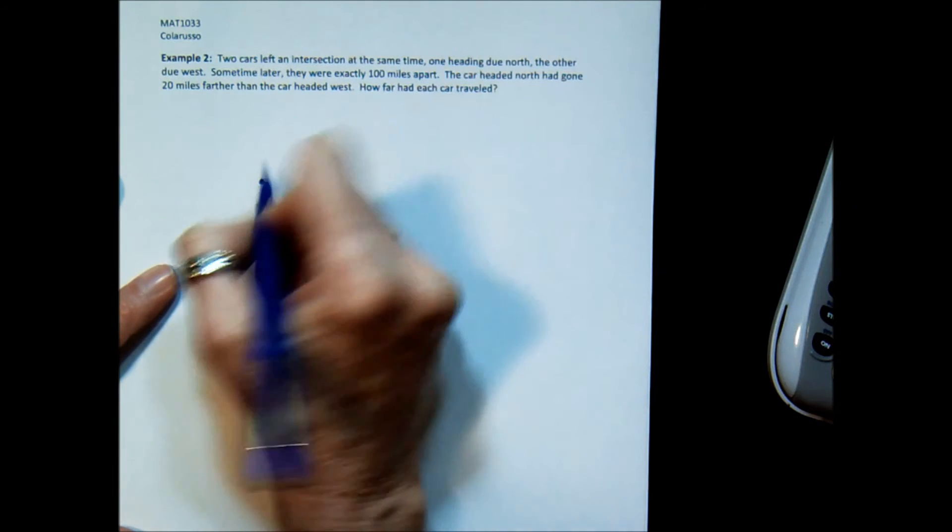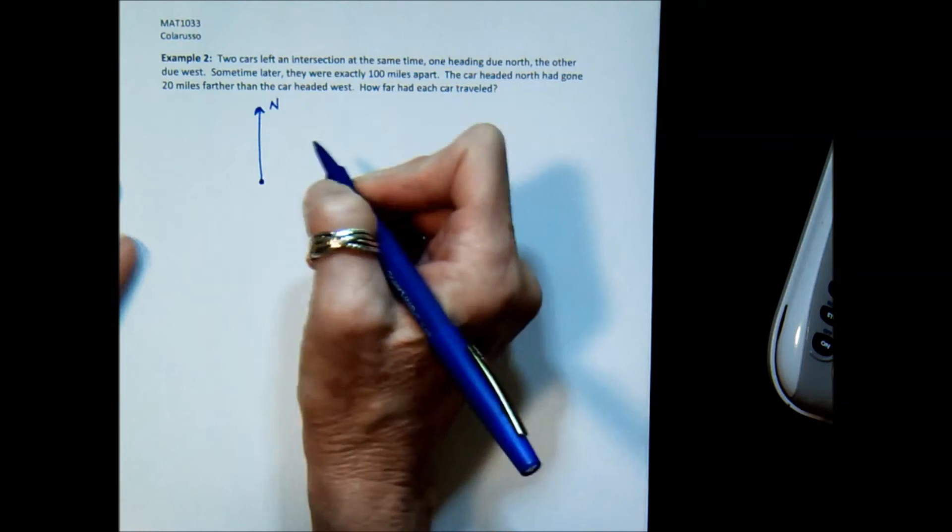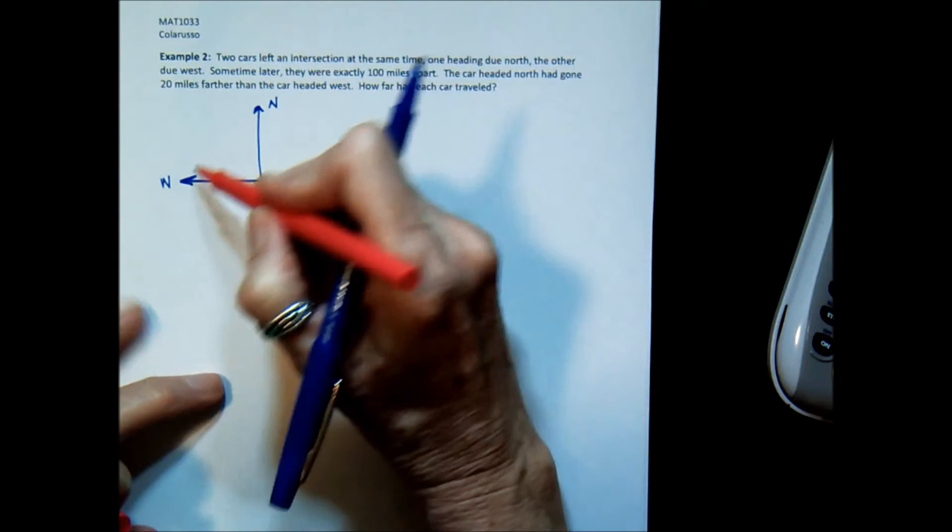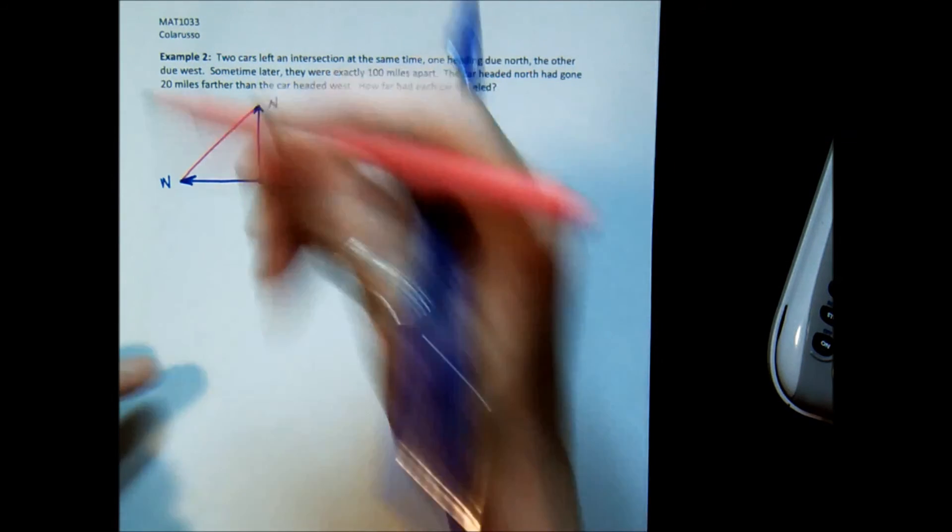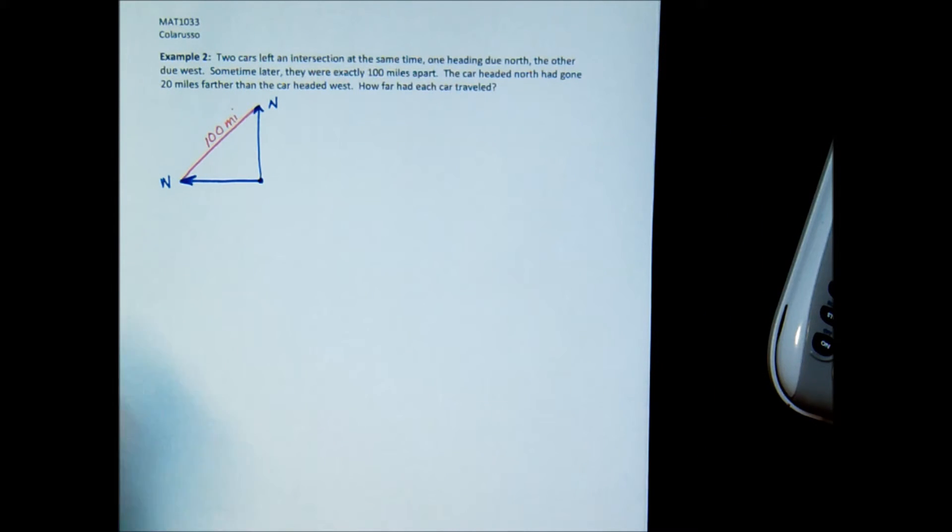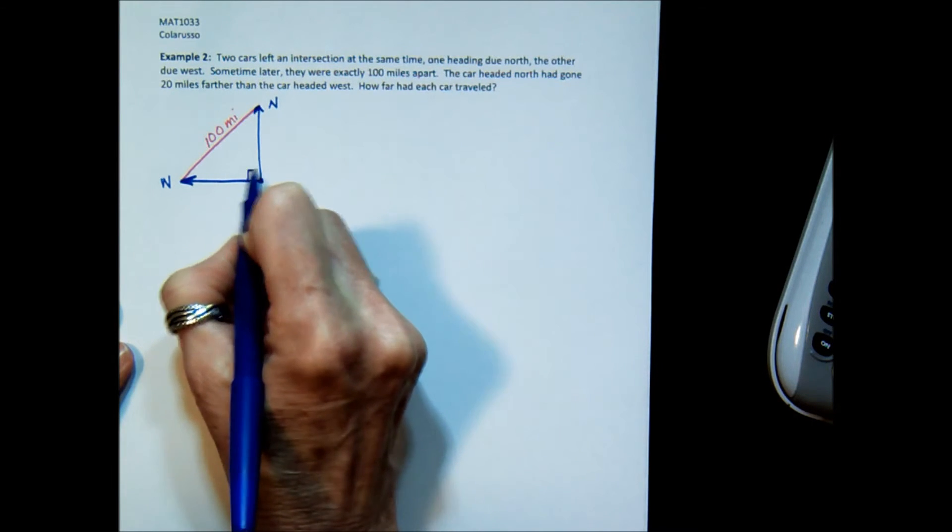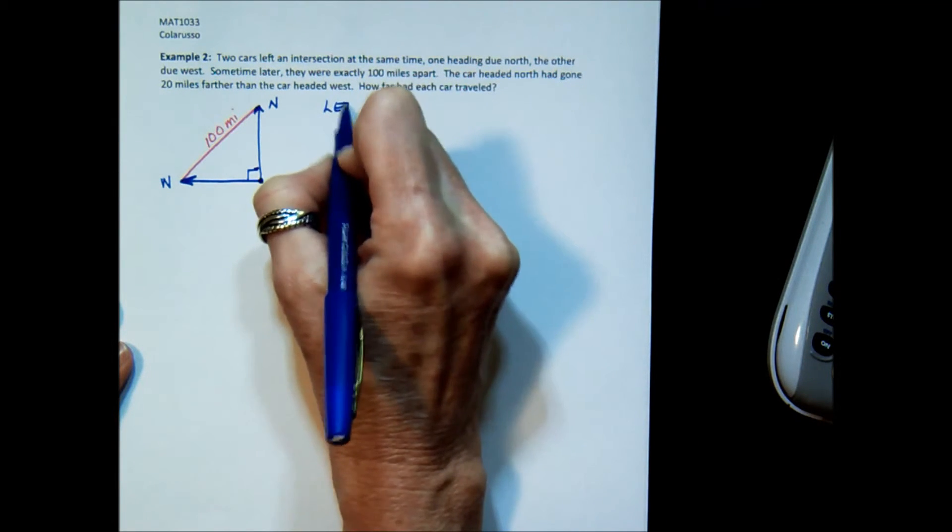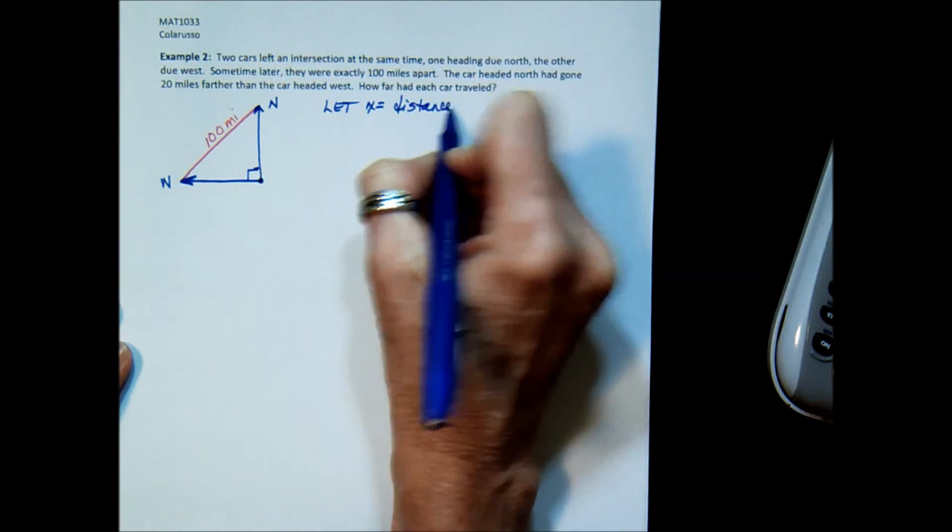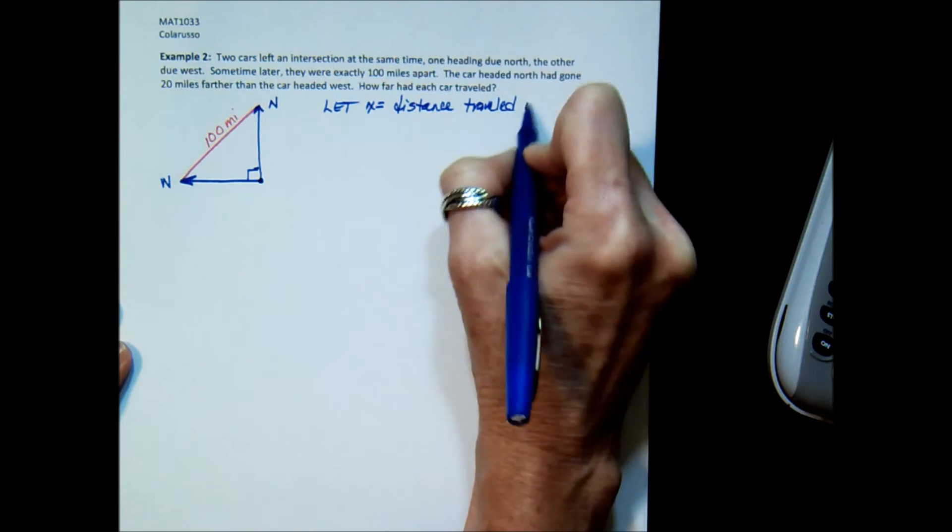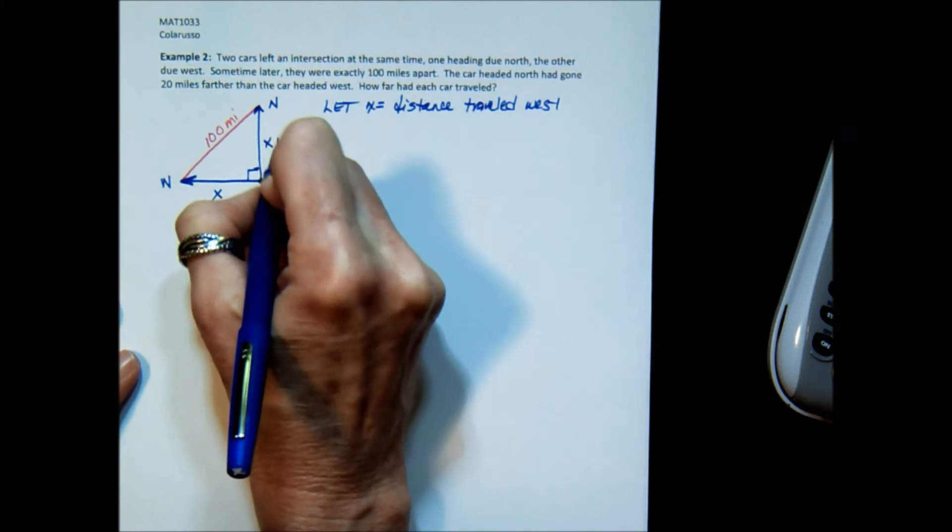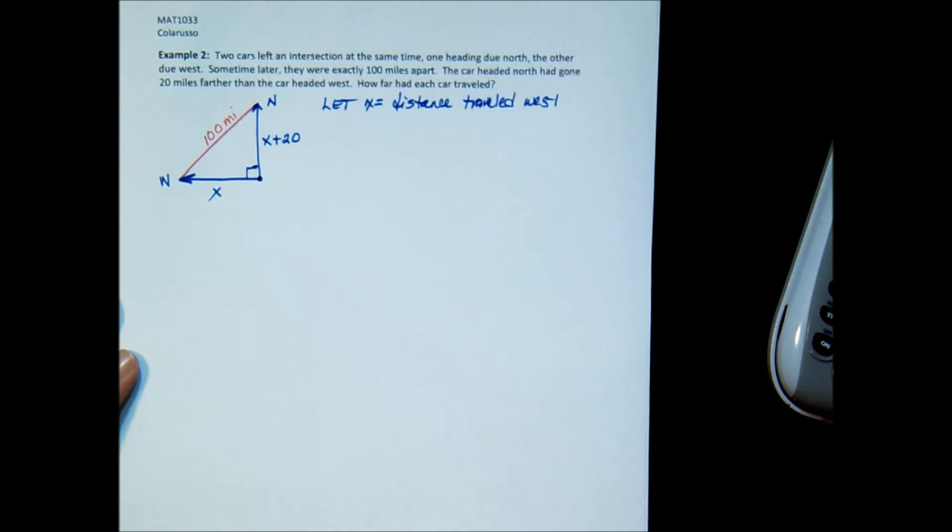So here is the intersection. Two cars. One went due north. So this is north. The other left the same intersection and went west. So that is west. And then at some point later in time, they were 100 miles apart. So this is 100 miles. Alright. Well, you can see that I have a right triangle. That's why it said due north and due west to show you that this is 90 degrees. It says the car headed north had gone 20 miles farther than the car headed west. So I'm going to say let x equal the distance traveled west. So this is x. And then it says that the car headed north had gone 20 miles further. So this is x plus 20. And in case you haven't figured it out, this is a problem involving the Pythagorean theorem.